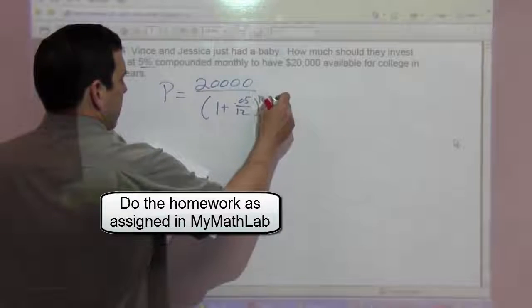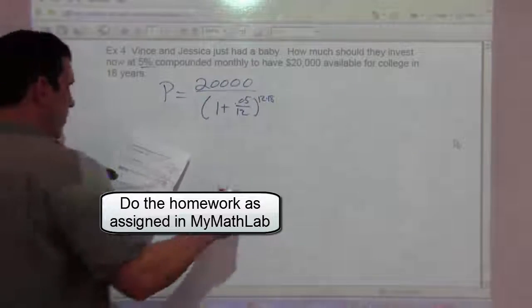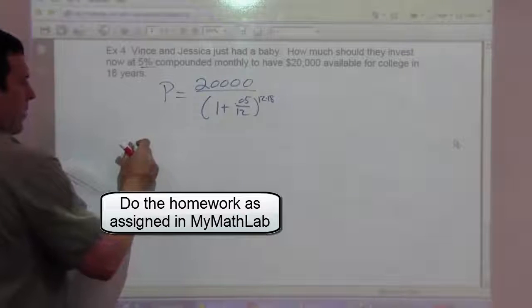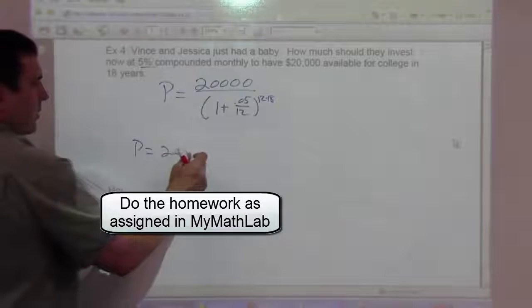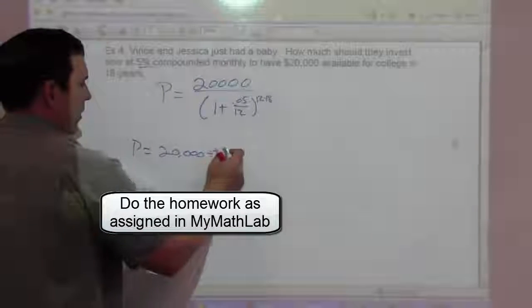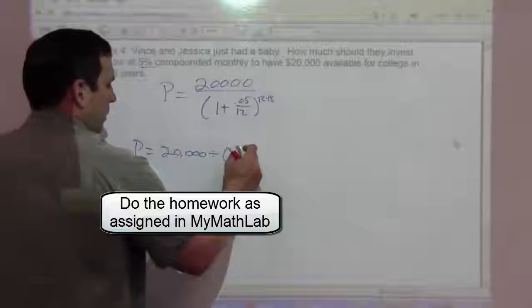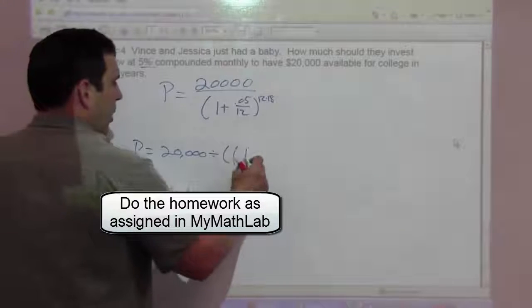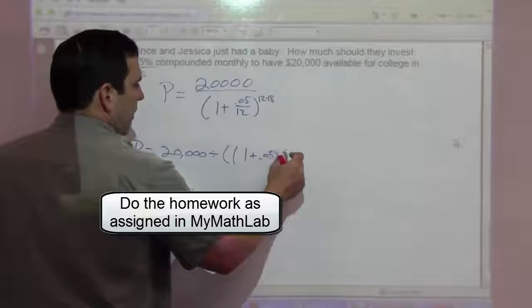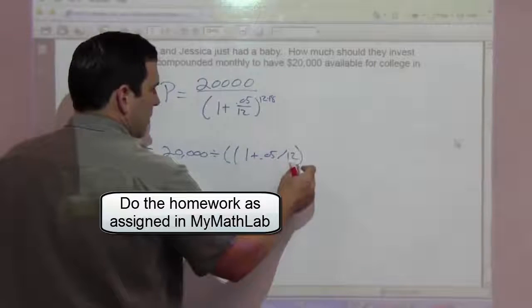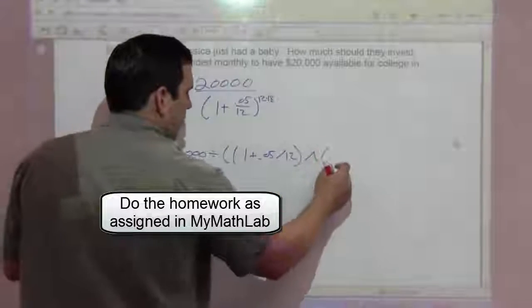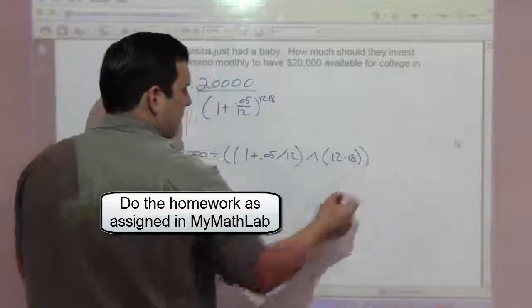to the 12 times 18 power. And in the calculator this looked like 20,000 divided by parenthesis, I do double parenthesis, 1 plus 0.05 divided by 12, close parenthesis, caret button, parenthesis 12 times 18, close, close.